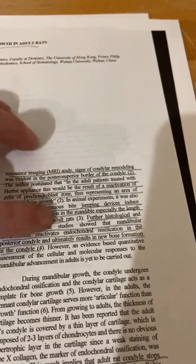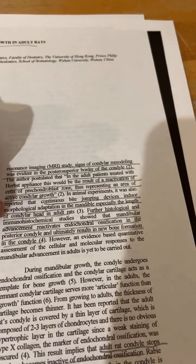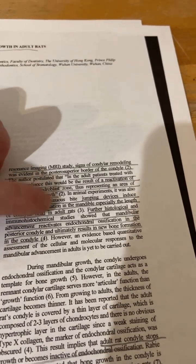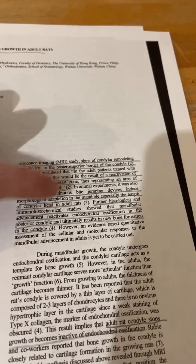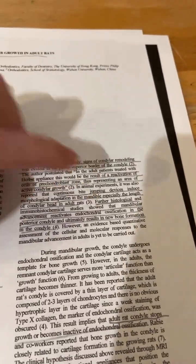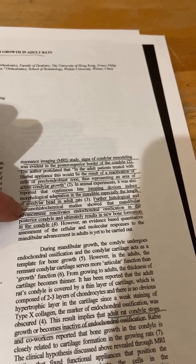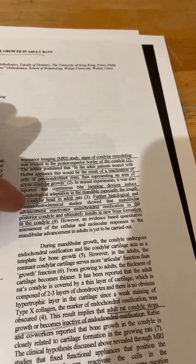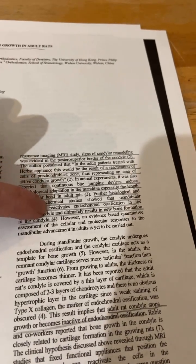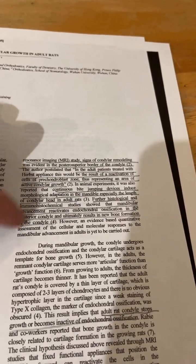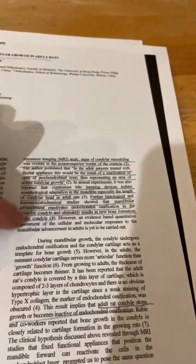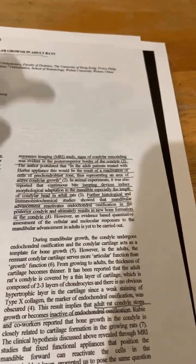Continuous bite-jumping appliances induce morphological adaptation in the mandible, especially the length of condylar head in adult rats. Further, histological and immunohistochemical studies shows that mandibular advancement reactivates endochondral ossification in the posterior condyle and ultimately results in new bone formation in the condyle, reactivates endochondral ossification.